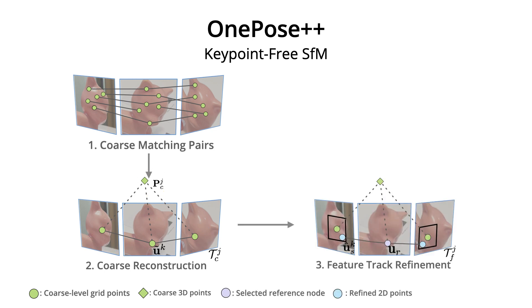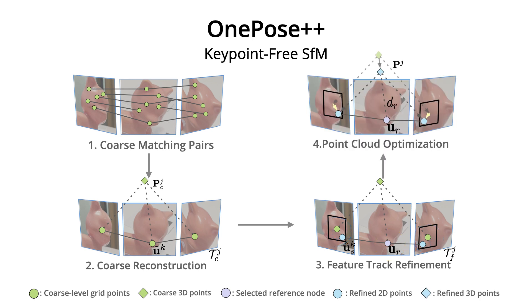In the refinement stage, we first refine the coarse feature track by fixing a reference node and searching around the local region of each source node for sub-pixel correspondences. The fine matching module is transformer-based, and our design efficiently achieves multi-view consistent matches. Finally, we optimize the depth value of the selected reference node by minimizing reprojection errors, and back-project the reference node with its refined depth to the object coordinate to obtain an optimized, accurate point cloud.